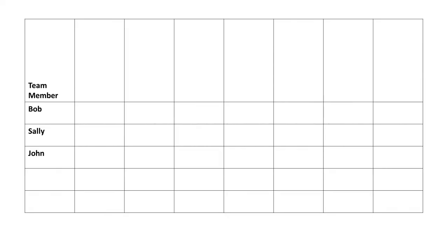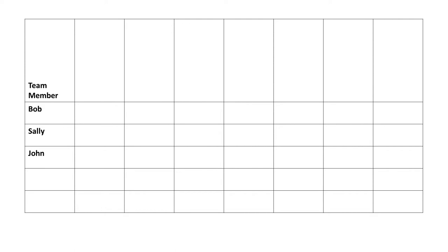Once you've answered those three questions, it's time to put together your team skills matrix. First, lay out the names of your team members on the left-hand side of your page. Next, you're going to list all the skills needed for the project on the top of the page. We're showing a simplified version here to make it clear and easy to understand, but when you do this, you should add all of the team members you need and all of the skills you believe are important for the project.